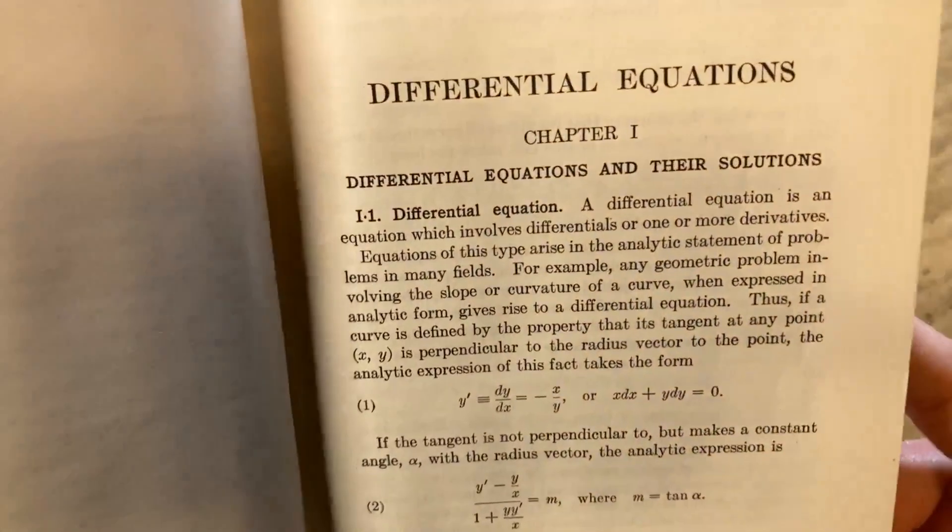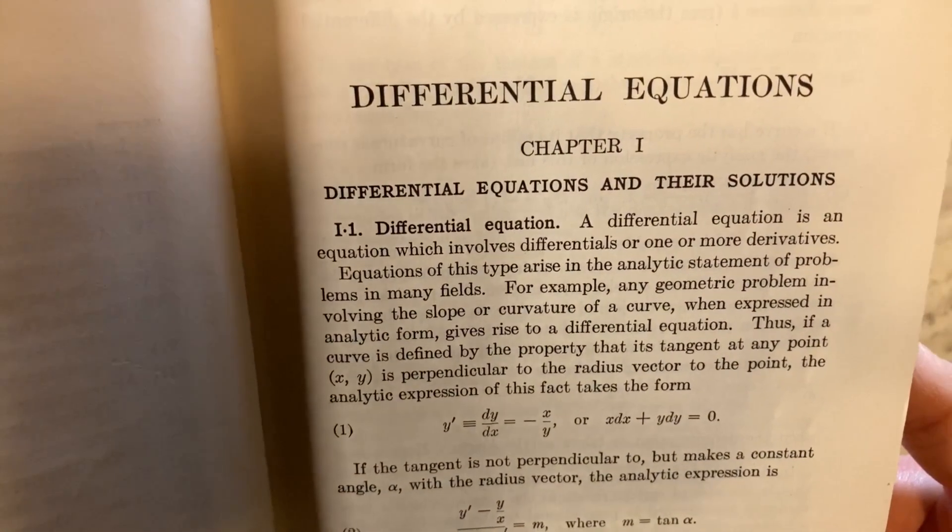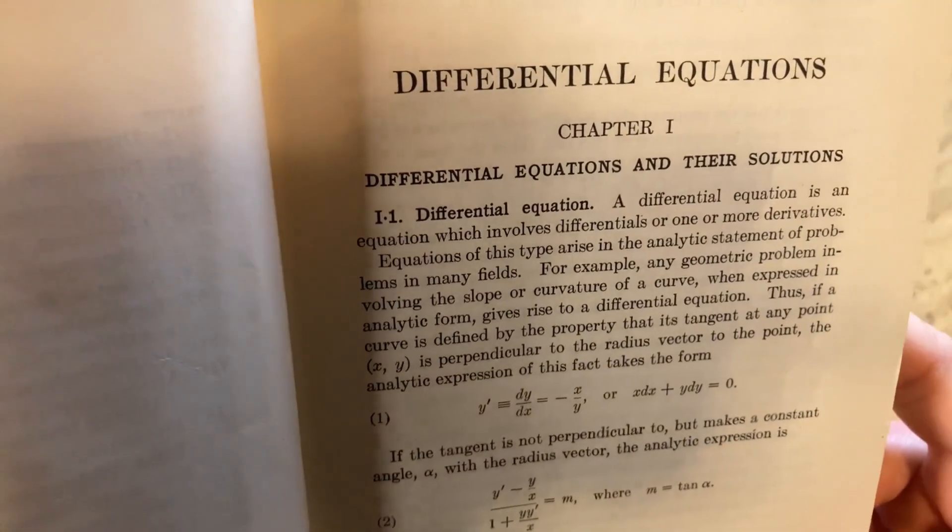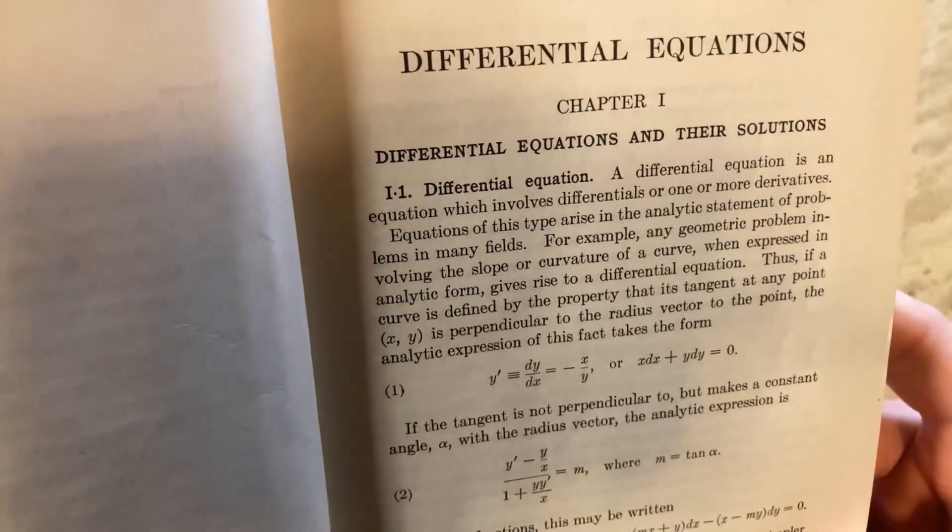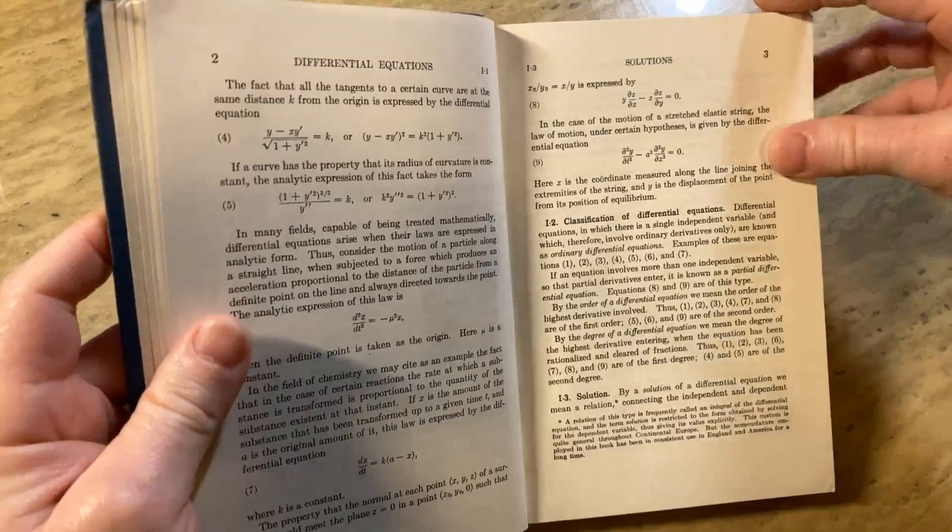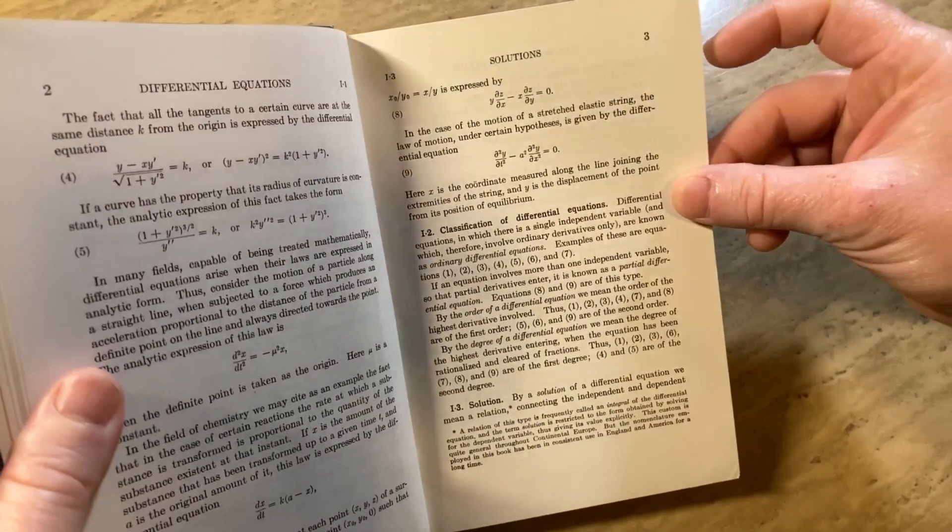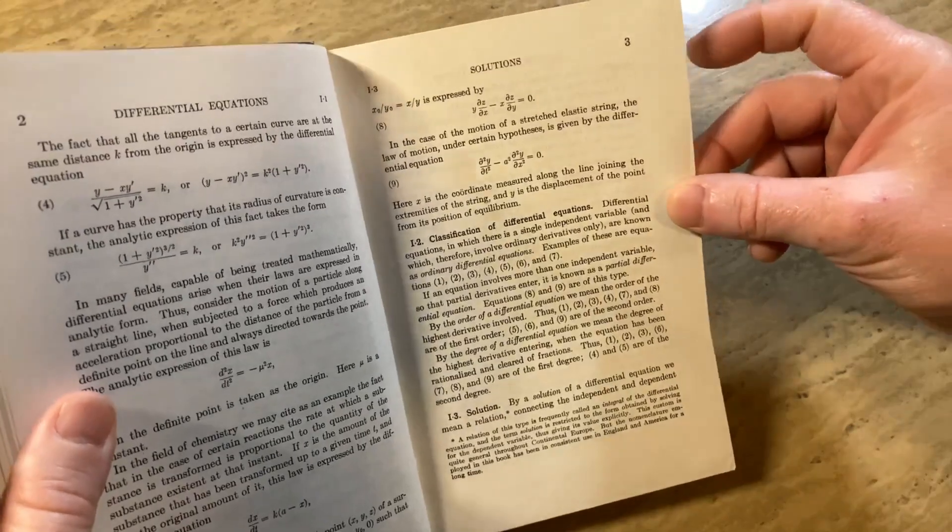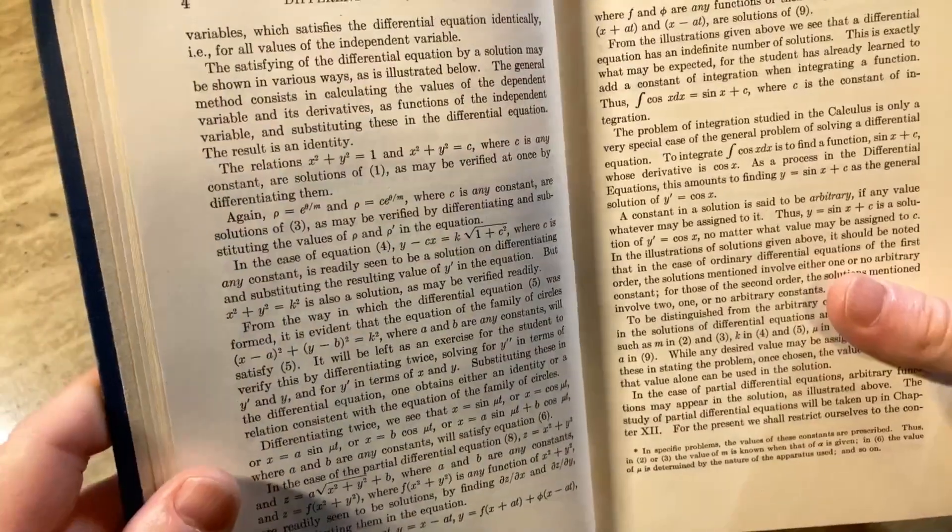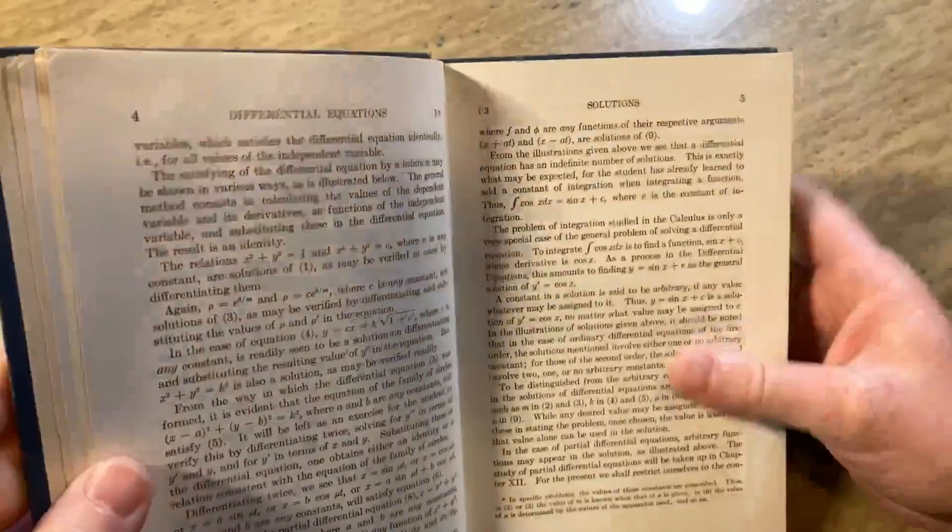Here's the very beginning of the book. A differential equation is an equation which involves differentials or one or more derivatives. Equations of this type arise in the analytic statement of problems in many fields. So you've got some examples here, and then some more examples. We have classifications of differential equations. They talk about the different types, the order, the degree, what's ordinary, what's partial. Really easy stuff. Then talk about what is the solution to a differential equation. Because everything needs to be well defined so that when you go further in the theory you know what it means.